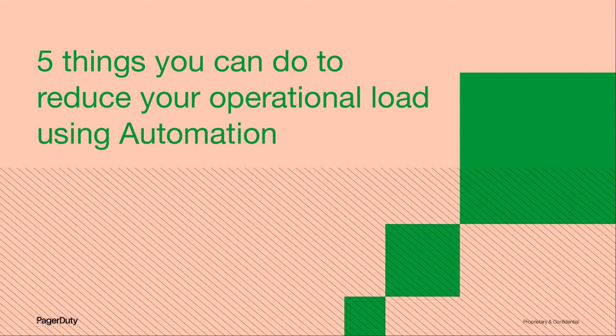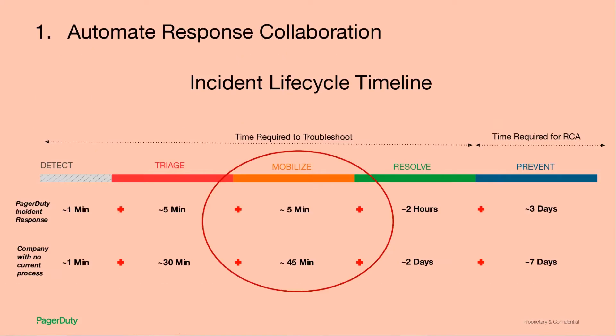There are a lot of different ways that automation can help incident response. Let's start with automating collaboration during an incident. Assuming that incidents are going to happen, when you have a major incident, it's really important to get the right people — and only the right people — together. Over the years, I've talked to lots of customers about this, and many, especially larger companies, say that it takes them about 45 minutes to assemble all the people they need to resolve a major incident.